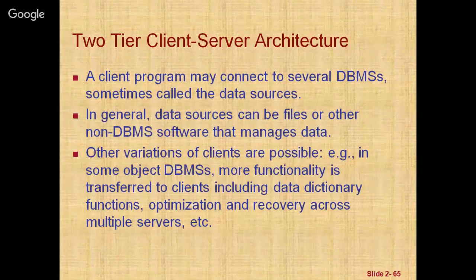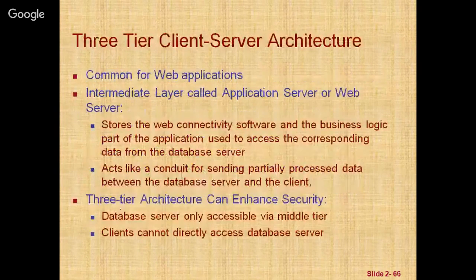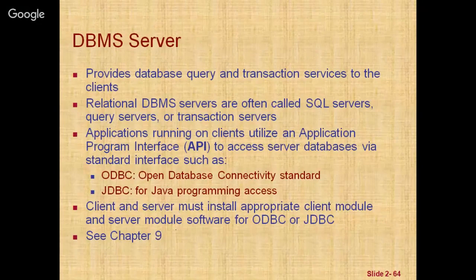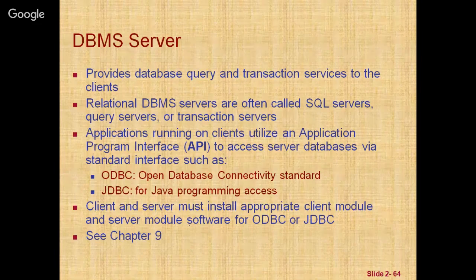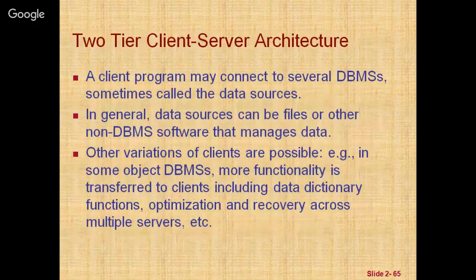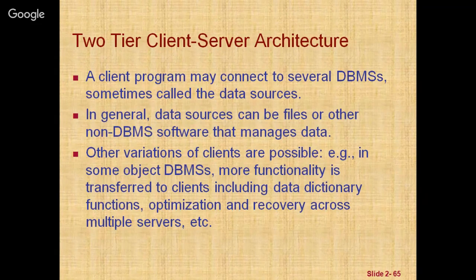Query results are sent back to the client program, which can process and display the results as needed. JDBC is also a standard interface for the Java programming language, allowing Java client programs to access one or more DBMSs through the standard interface. This architecture is called two-tier because the software components are distributed over two systems — the client and the server. An advantage of this two-tier architecture is its simplicity and compatibility with existing systems.